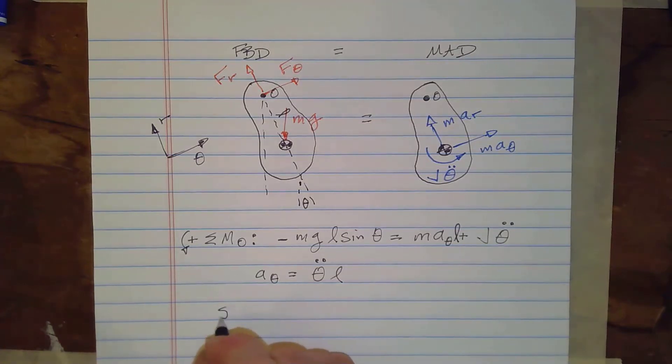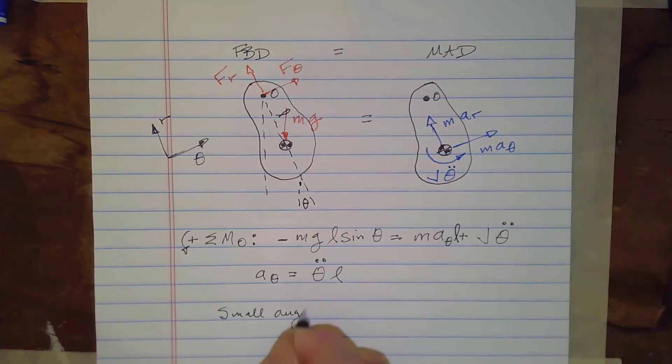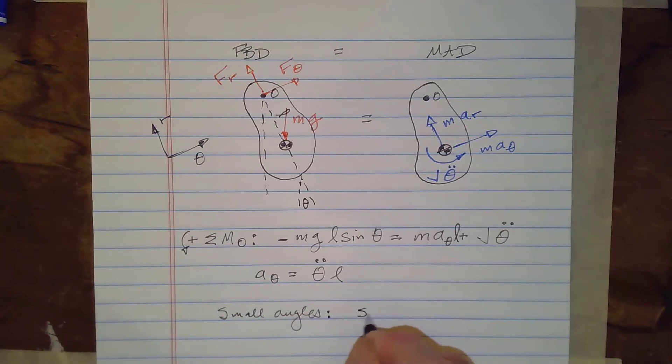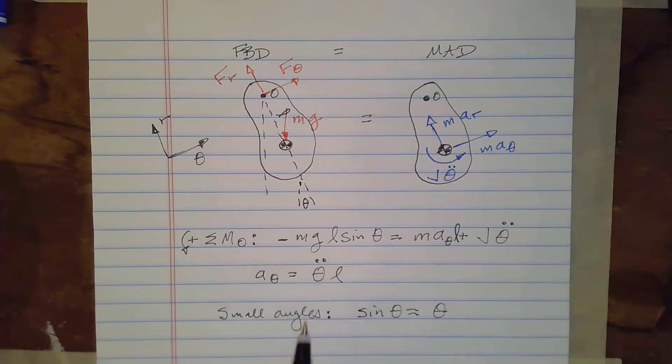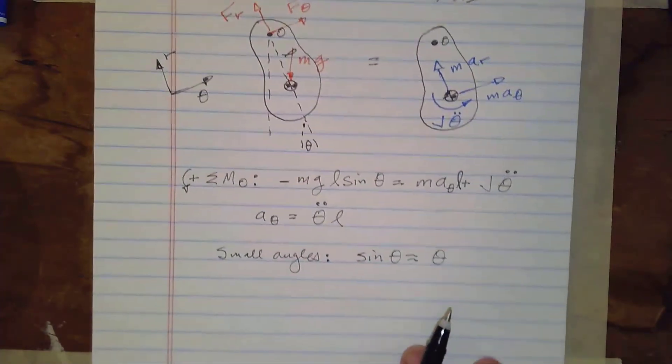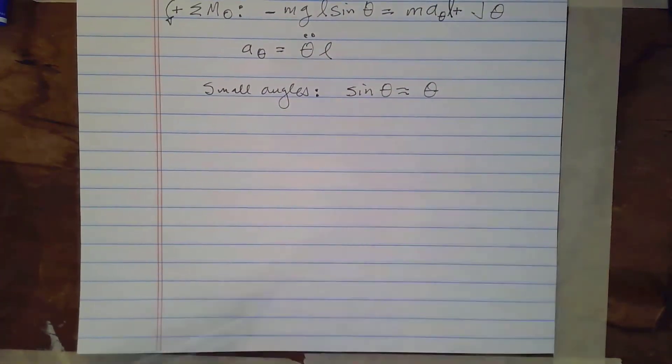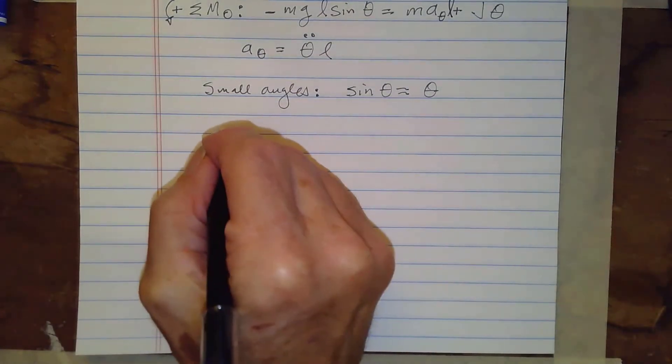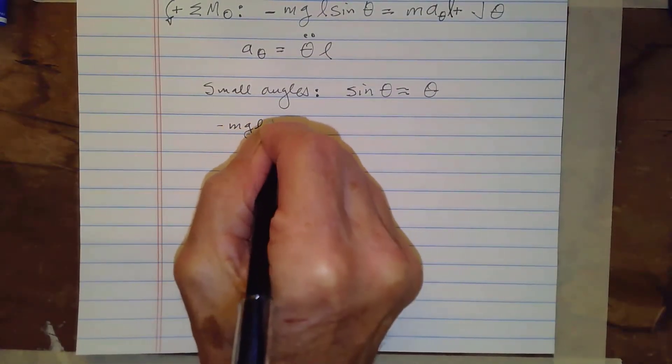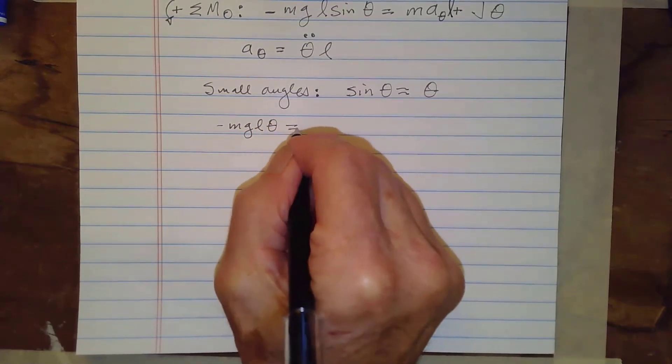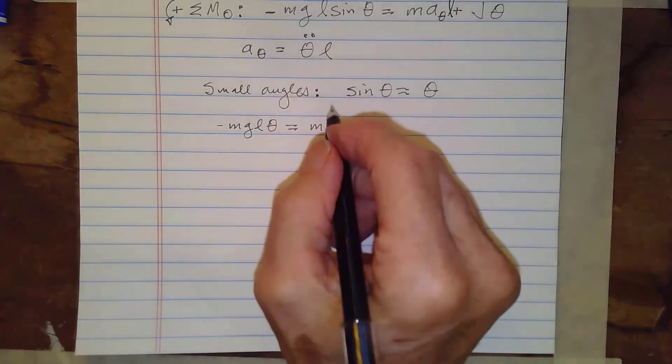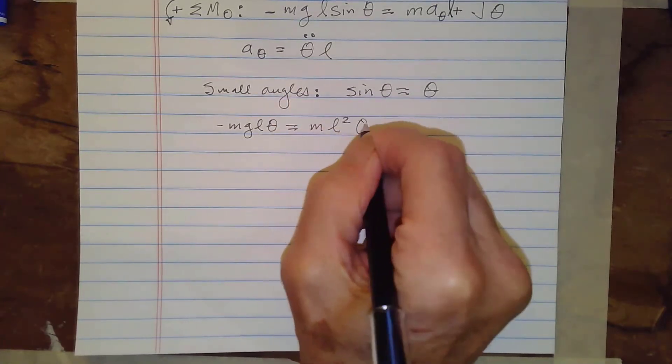And then I think that is all we need. Oh yeah the other thing is small angles mean that sine theta is about equal to theta so I'm going to put both of these in this equation. The first thing I'll do is I'll move this over to this side. Let me slide up a little bit so that we don't run off the page that ought to work so let me include all of these minus mg L theta equals m and then it's going to be L squared theta double dot.